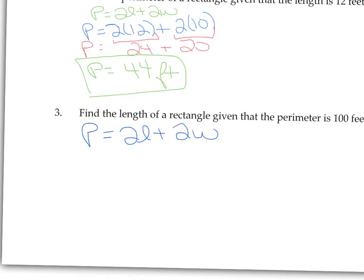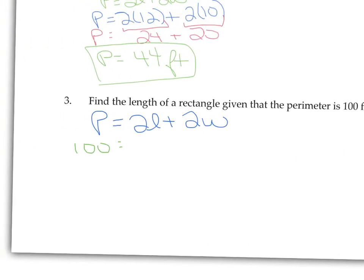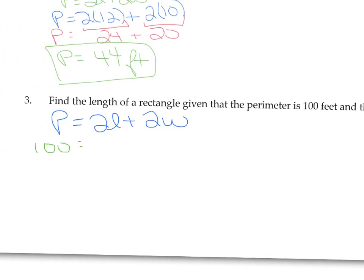Perimeter is 2 times the length plus 2 times the width, but this time we have different information. We know that the perimeter of this rectangle is 100 feet, so this time I'm replacing P with 100. The width is 15 feet, so we're going to replace W with 15.